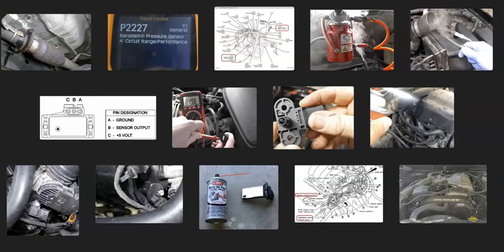That's basically it — a basic overview of how you go about fixing a vehicle with a P2227 code. If you have anything to add, please comment below. If you have questions, ask and I'll try to answer them. If this video helped you, please click like and subscribe, and have a good day.